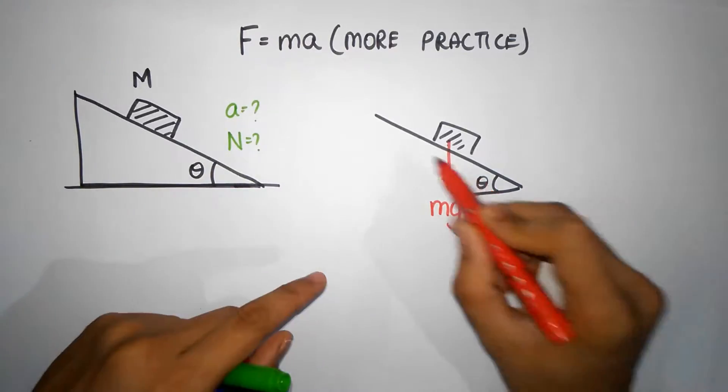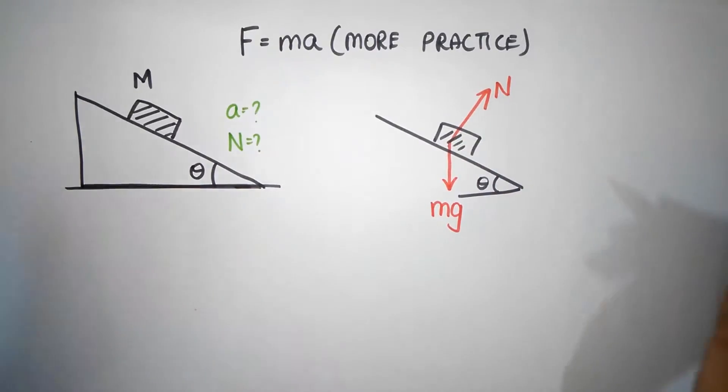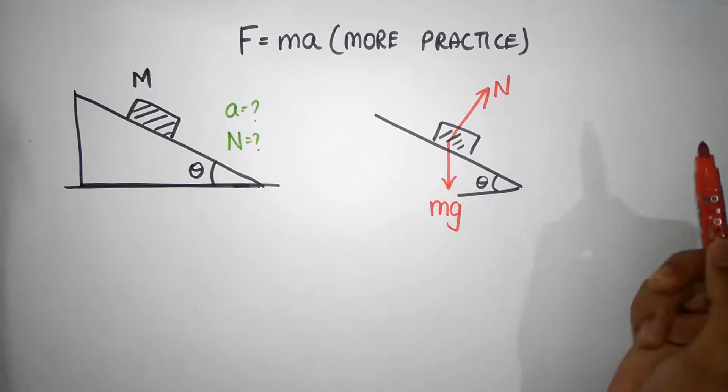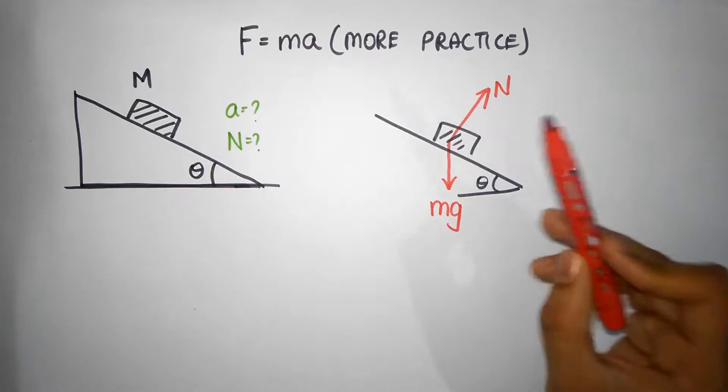We have the normal force which is perpendicular to the surface, so the normal force is going to be this way. And there aren't any other forces. There is no friction, so these are the only two forces, which means we have to now use these two forces to figure out the acceleration.